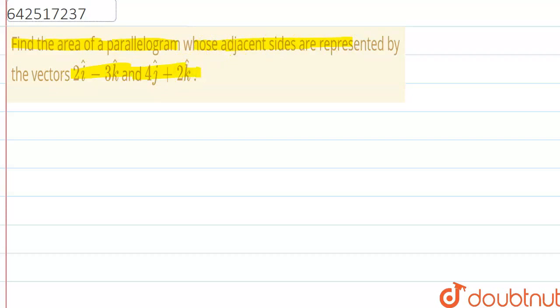We know that a parallelogram—area of a parallelogram with given adjacent sides, area of parallelogram with adjacent sides represented by the vectors a vector and b vector—area is equal to a vector cross b vector.